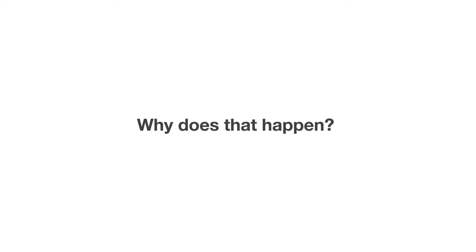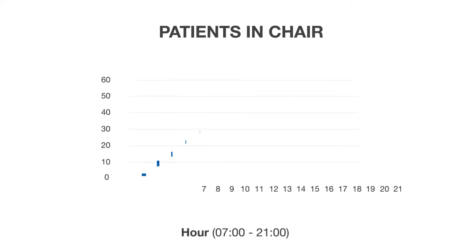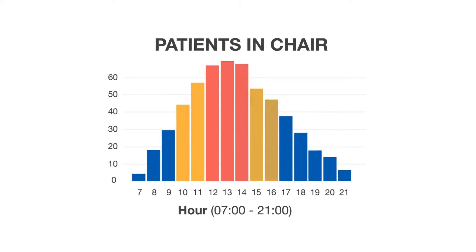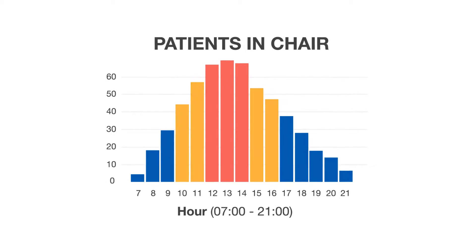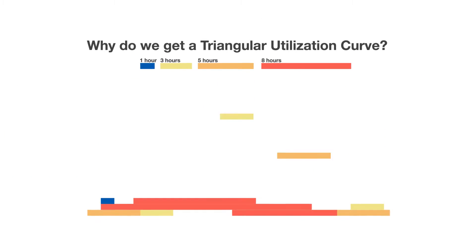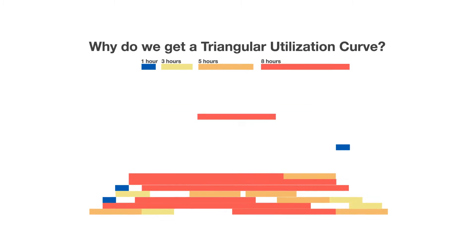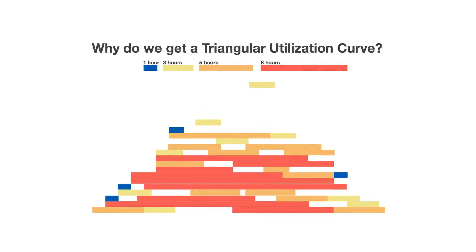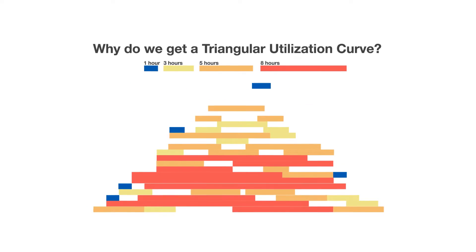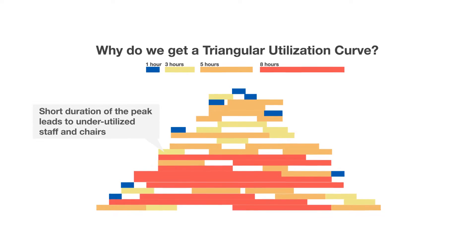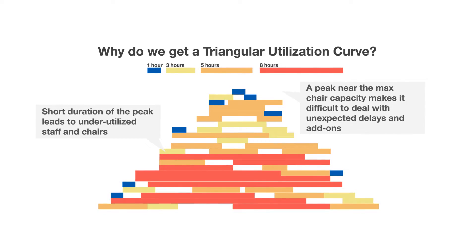Why does that happen? Because almost every day starts with slow mornings and ends with slow evenings, with a chaotic period of time in the middle of the day. Most patients want to avoid the morning and afternoon rush hour, schedule their clinic and infusion appointments on the same day, and have varying treatment times. Moving them smoothly is a complex math problem most scheduling systems aren't equipped to handle.